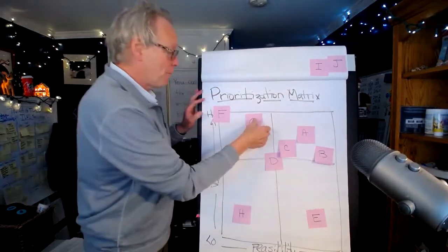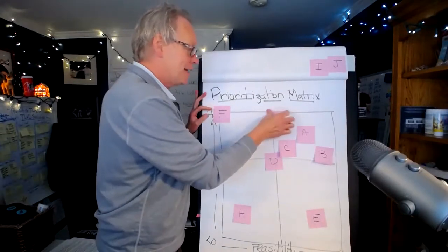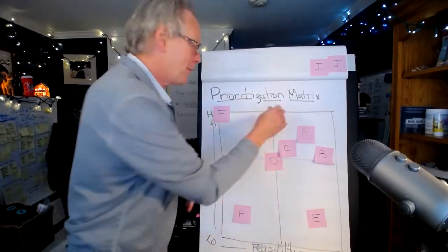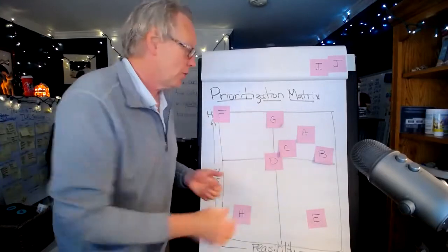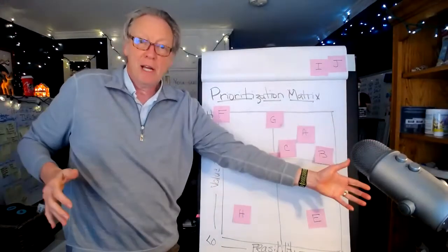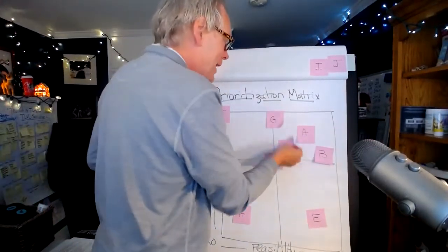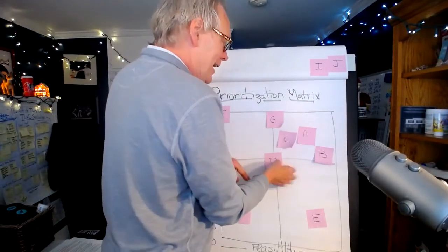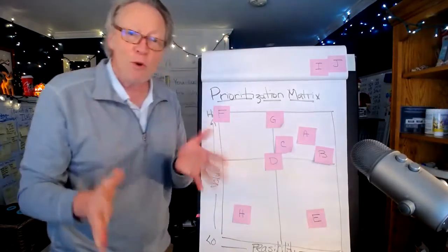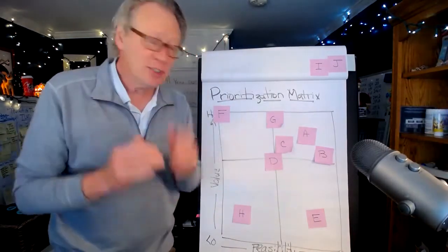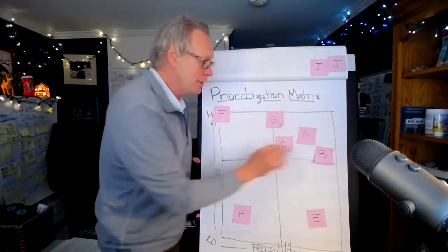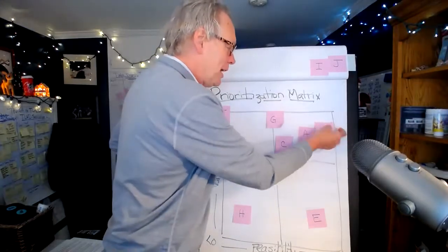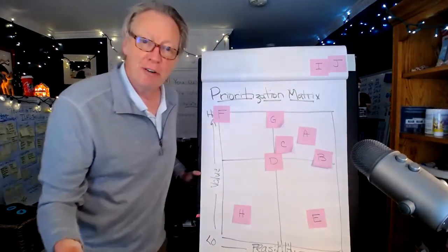The beauty of this process is very interactive. You bring all the stakeholders together, you gather around a whiteboard, and you argue and debate the value placement and the feasibility placement. And you force people to have to justify when they want to move something, when they want to make B more valuable. And as a facilitator of this process, you have a chance to ask.